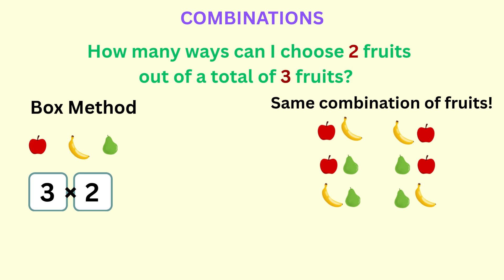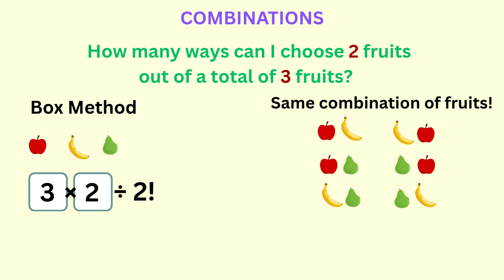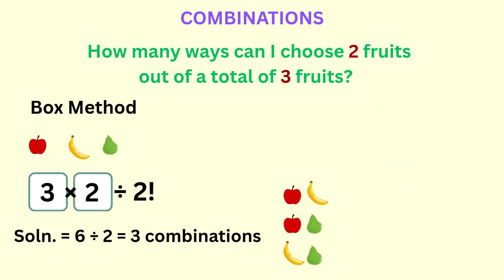So to avoid double counting, we need to divide by the number of ways that each combination can be arranged — that's two factorial, since each combination has two items. So the number of possible combinations of fruits is three times two, divided by two factorial. This gives us six over two, which is equal to three — the same number of arrangements Zuri got when she listed them.